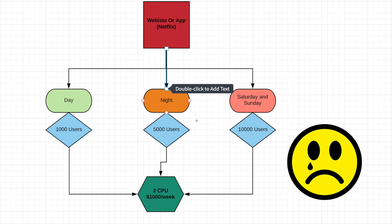So if you have this kind of app, what will you do? You'll buy two CPUs to handle those users. You can't rely on one CPU to handle 5,000 or 10,000 users because your server will crash, you'll get heavy load, and you'll lose all your users. So you take two CPUs costing around a thousand dollars per week for 10,000 users. But you're wasting CPU capacity during daytime and night — it's only fully useful on Saturday and Sunday. Once you purchase a server from AWS, Microsoft Azure, or Google Cloud, you end up wasting server resources.